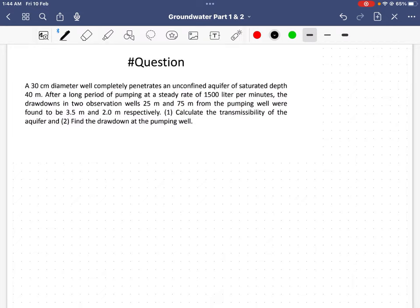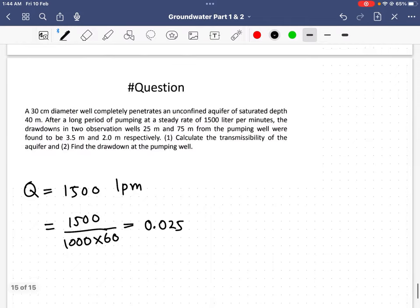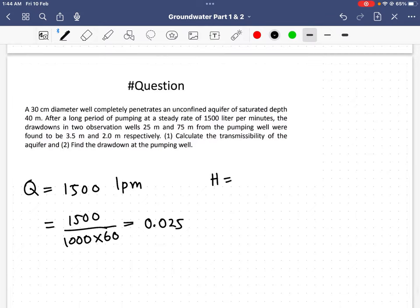First, I have Q equal to 1500 liters per minute. I'm going to convert into cubic meters per second, so I will get 0.025.